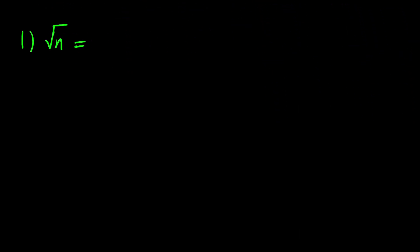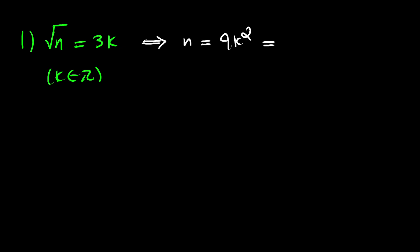For the first case, let's say that square root of n is equal to 3k, where k is an integer. Squaring both sides gives n equals 9k squared, which can be written as 3 times 3k squared. Since k is an integer, 3k squared is an integer, so I can replace it with some integer p, giving n equals 3p.